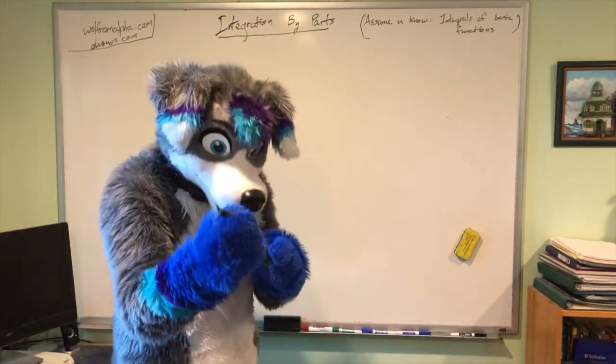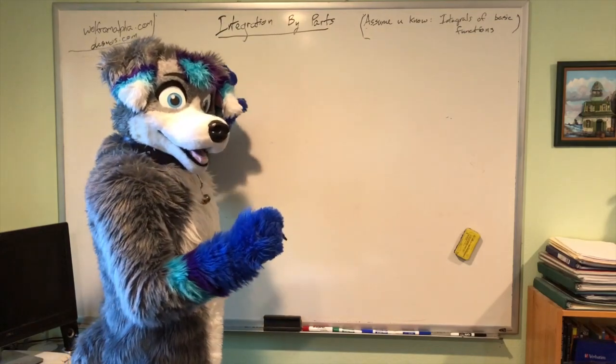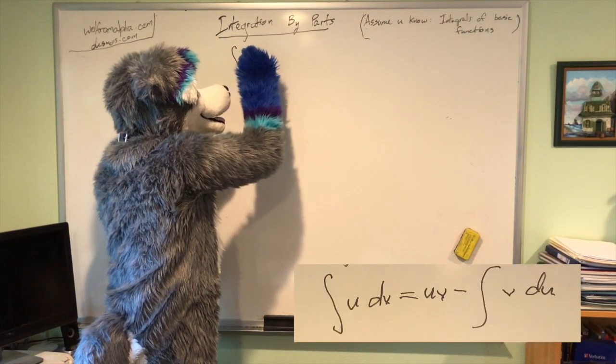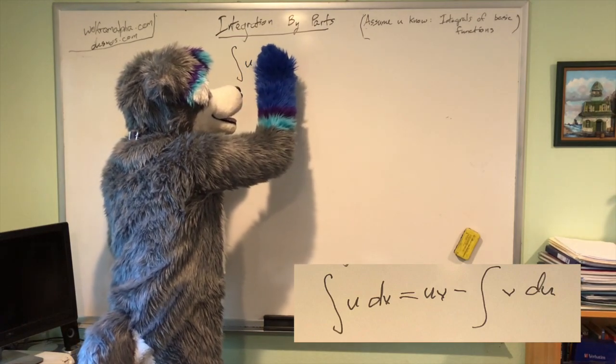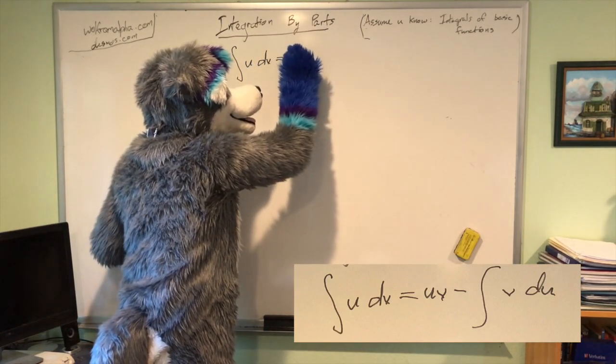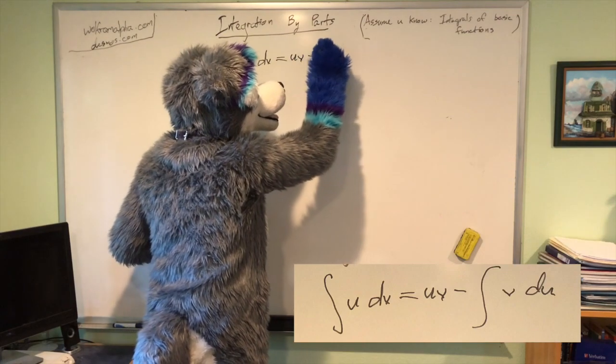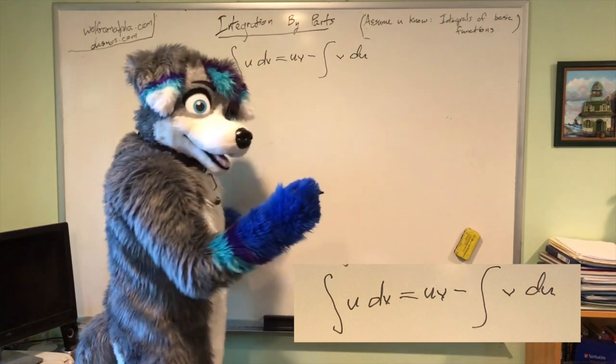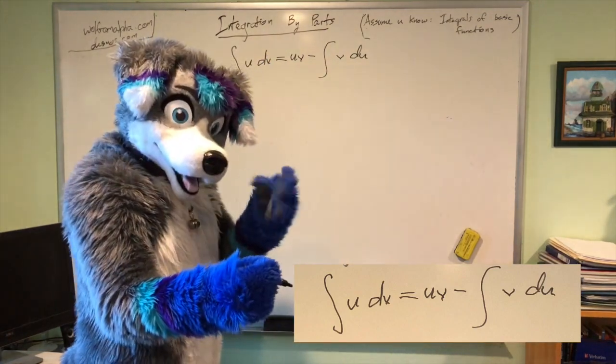Dive with the fluff. So the integration by parts formula is the integral of u dv equals u v minus the integral of v du. And I apologize for my bad handwriting with my pauses.